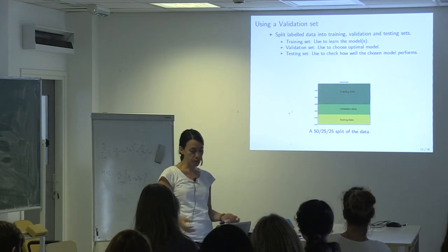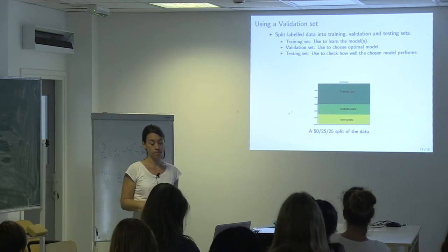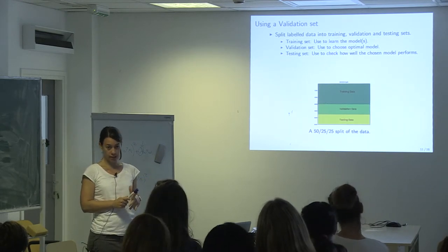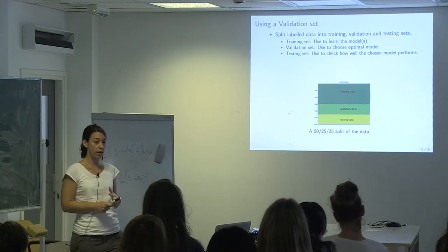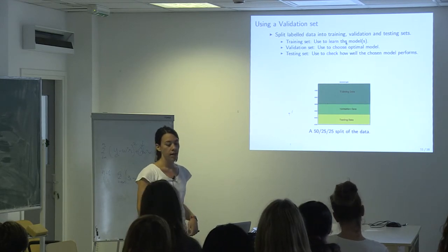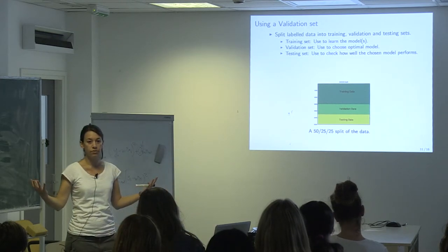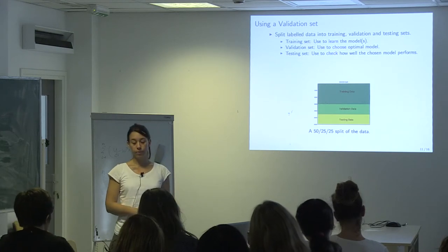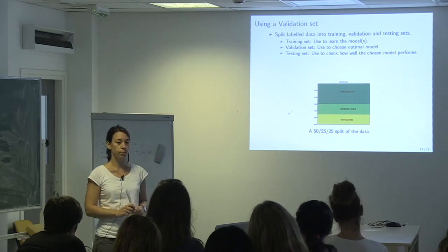The easiest thing to do is split our data into three datasets. We have the training set, which we use to learn the model. We have a validation set, which we use to choose the optimal model — the best lambda if we are regularizing, or the best order of the polynomial. And we need a third dataset called the testing set to check how well the chosen model actually performs.